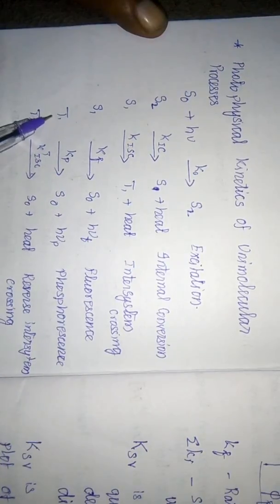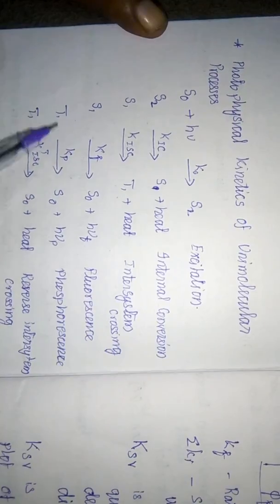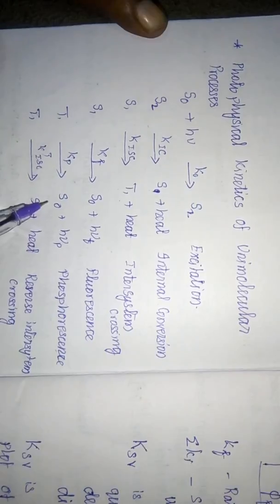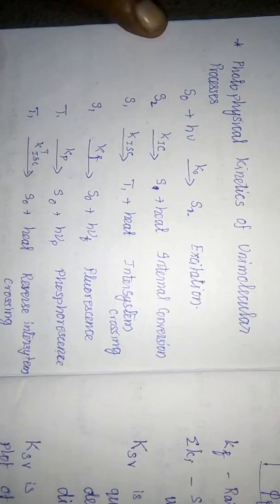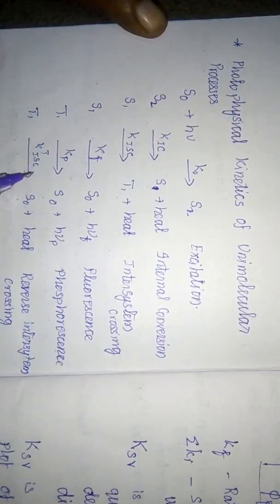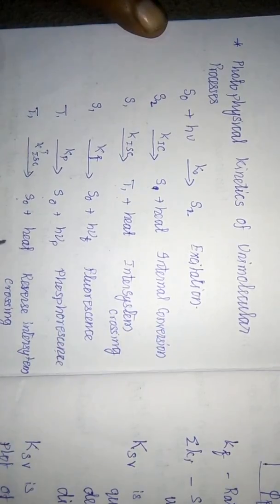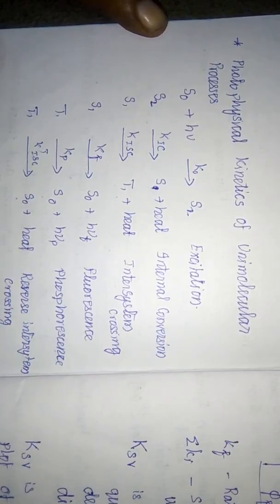From the T1 state there are two possibilities. T1 can move to the ground electronic level S0 and the extra energy is dissipated as phosphorescence. Alternatively, from T1 it can also move to S0 via inter-system crossing, emitting the energy as heat instead of phosphorescence — this process is called reverse inter-system crossing.